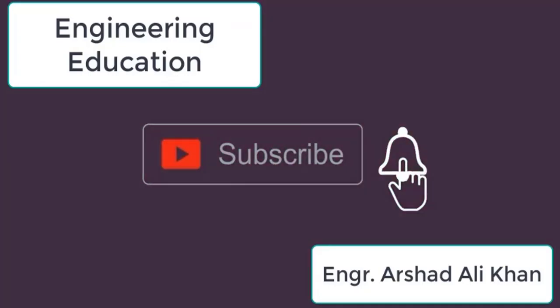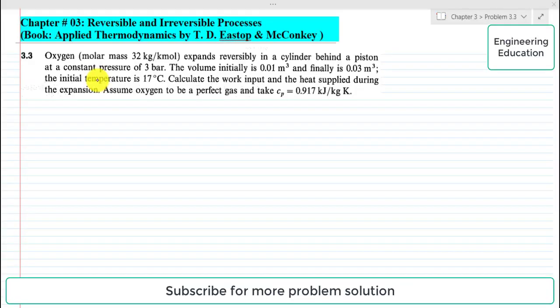Hello students, welcome to my channel Engineering Education. Please subscribe my channel, thank you. In this lecture we are going to solve problem 3.3 from chapter number 3, Reversible and Irreversible Processes from the book Applied Thermodynamics by T.D. Eastop and McConkey.